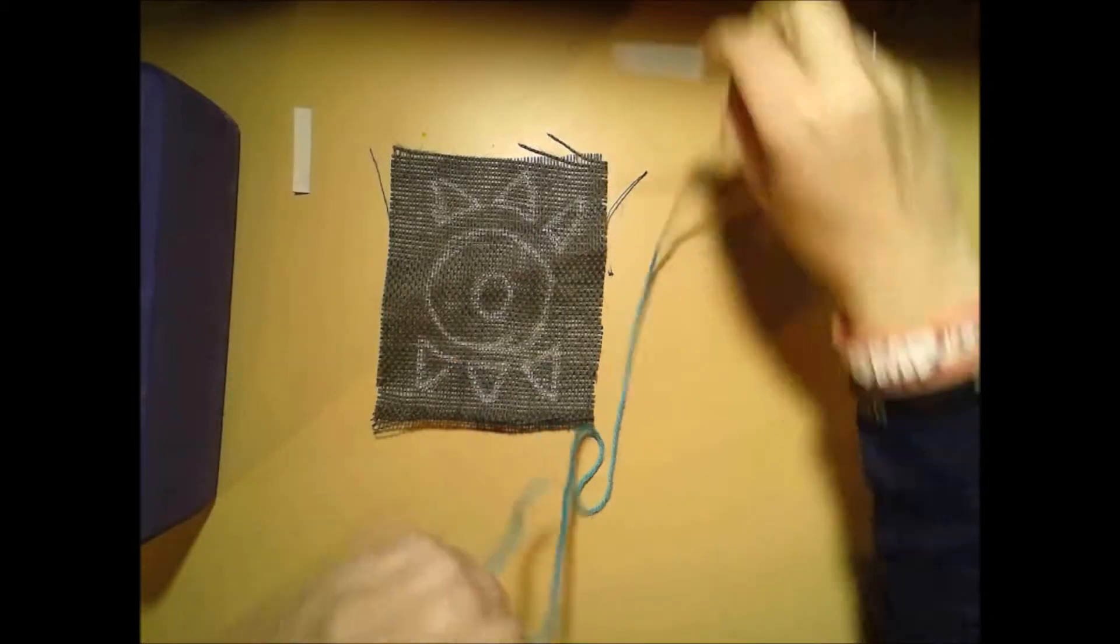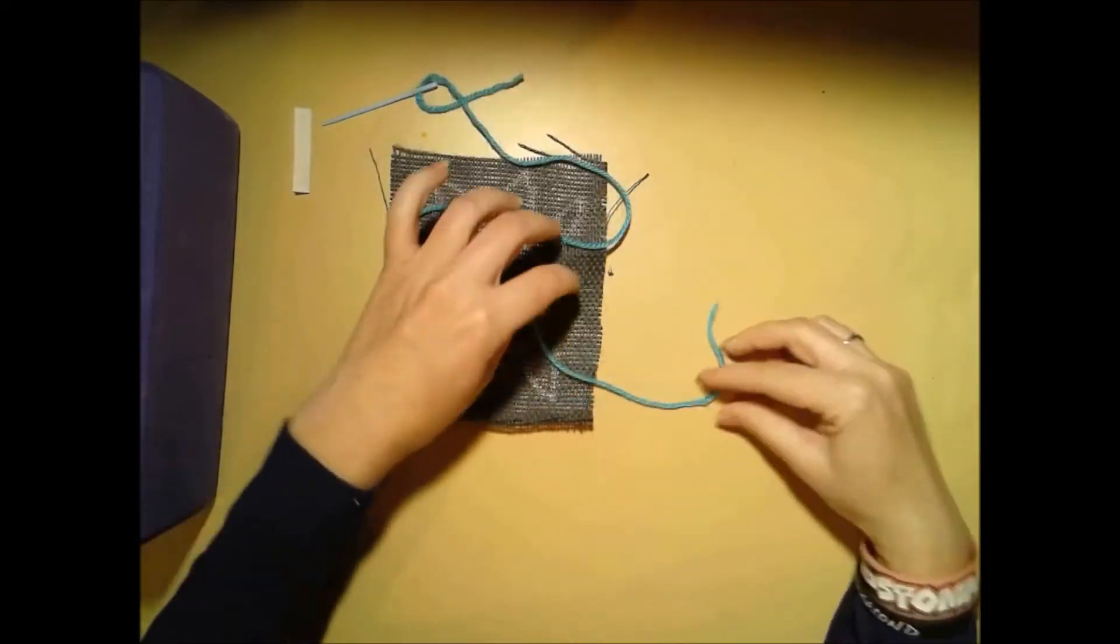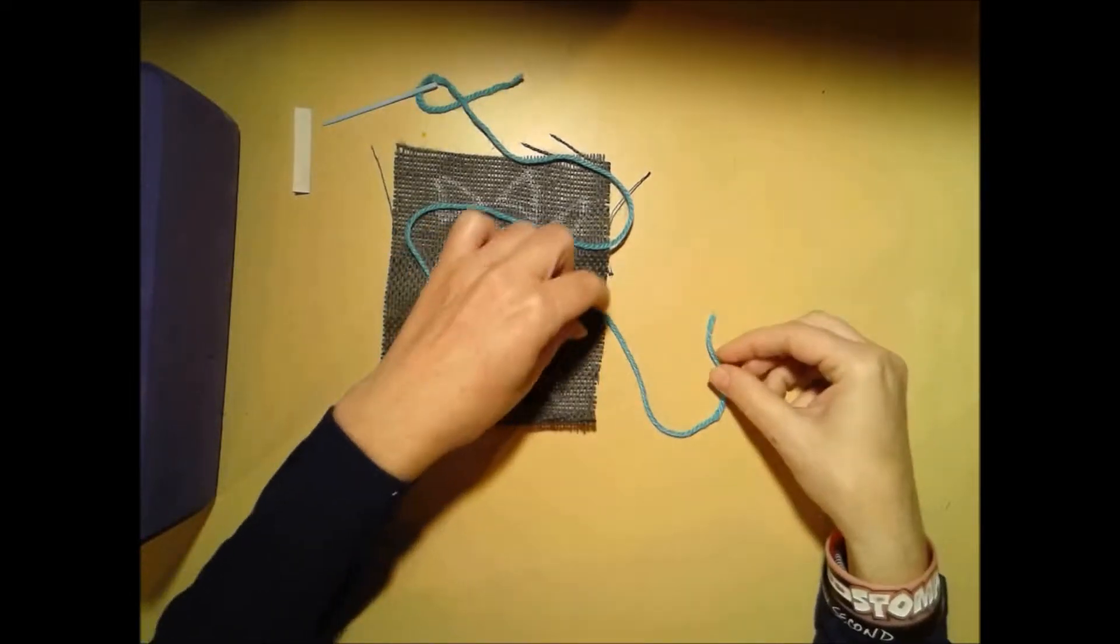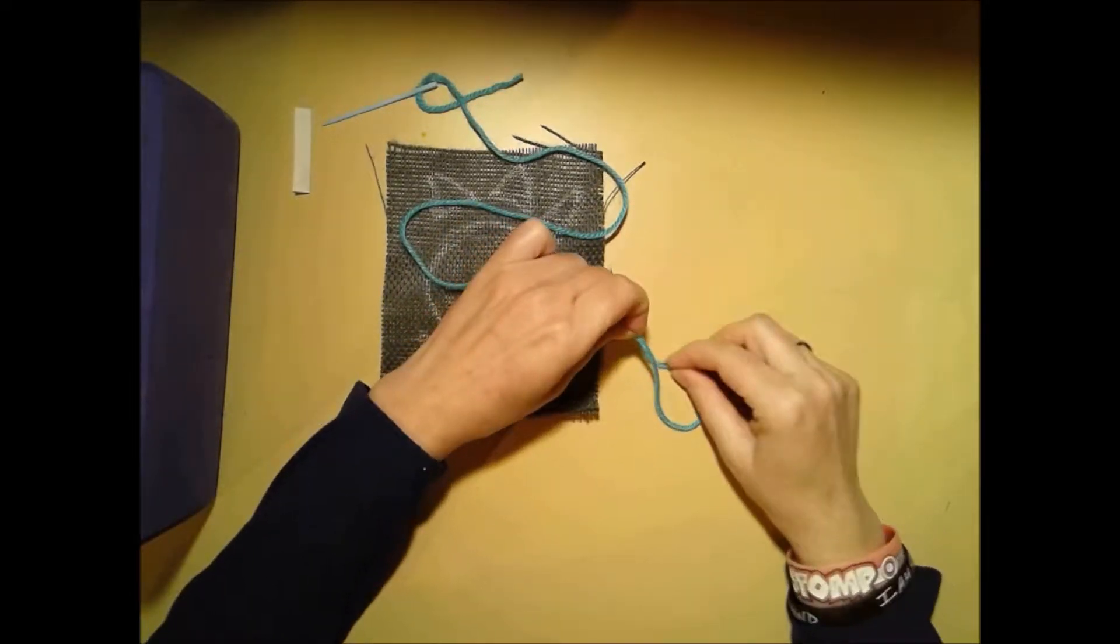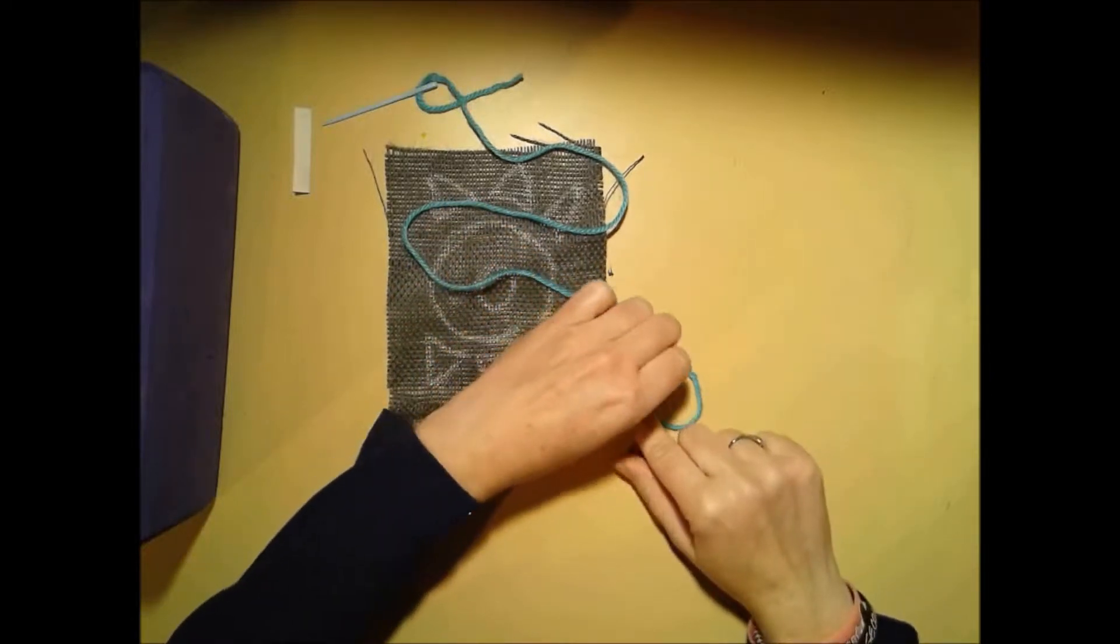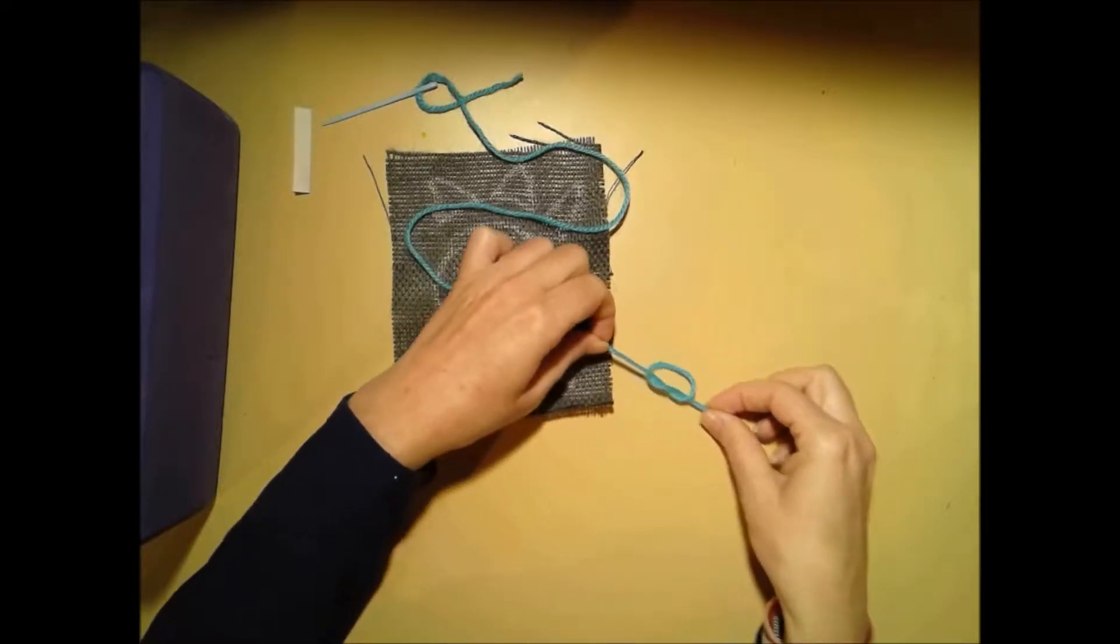Now on the other end I need to make a knot. So I'm going to make a U, take the end under so that it makes an O, put the end inside the O, lift this side up, and pull the string.